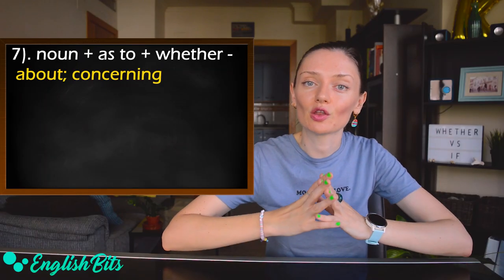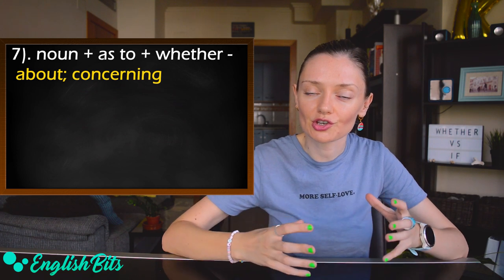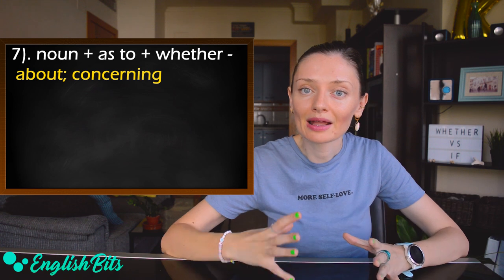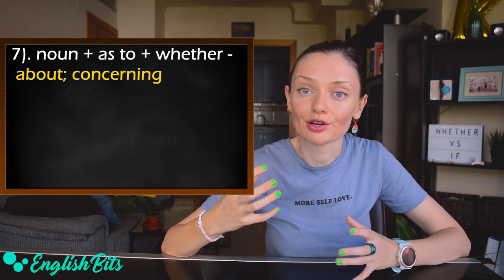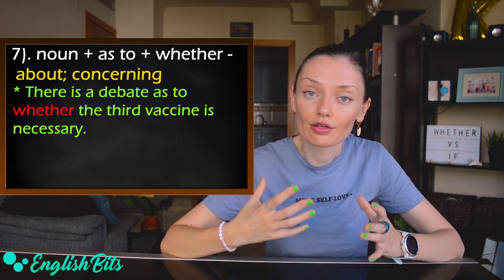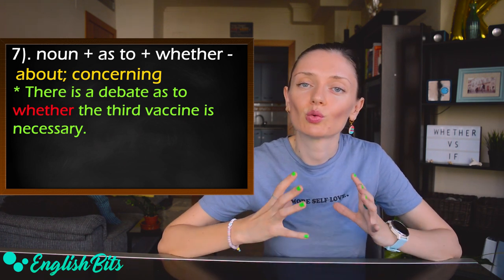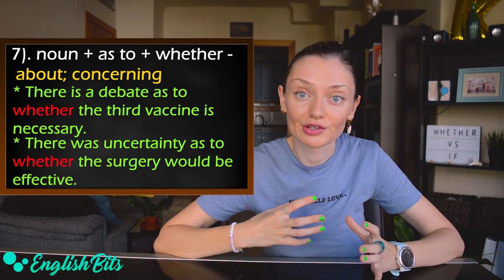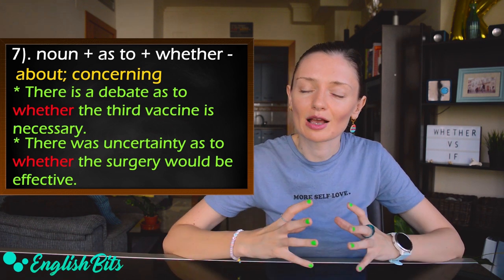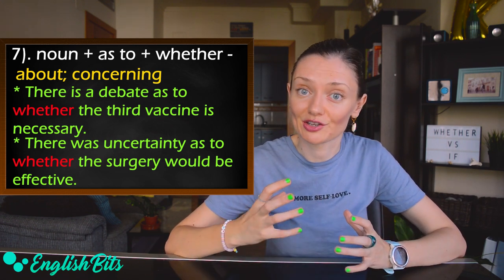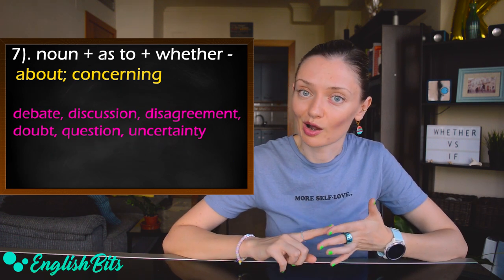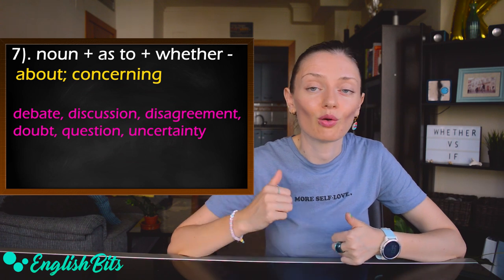And last but not least, number seven: the structure noun + 'as to' + 'whether', meaning 'about' or 'concerning'. First example: 'There is a debate as to whether the third vaccine is necessary.' And one more: 'There was uncertainty as to whether the surgery would be effective.' Some nouns commonly used in this pattern are: debate, discussion, disagreement, doubt, question, or uncertainty.